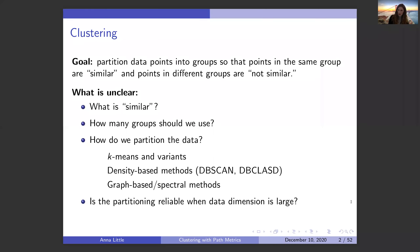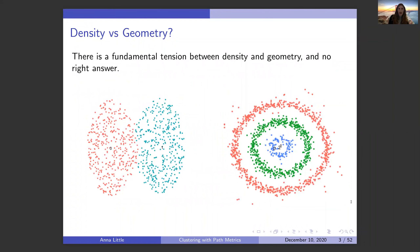There are lots of interesting questions: is the partitioning reliable when the data dimension is large? One of the questions I'm going to focus on is the trade-off between density and geometry. There's usually a fundamental tension between methods which cluster based on density and methods which cluster based on geometry. In the dataset on the left you have two clusters with very good geometric separation but no density separation, and on the right you have three interlocking rings with very good density separation but poor geometric separation, since the means are very close together.